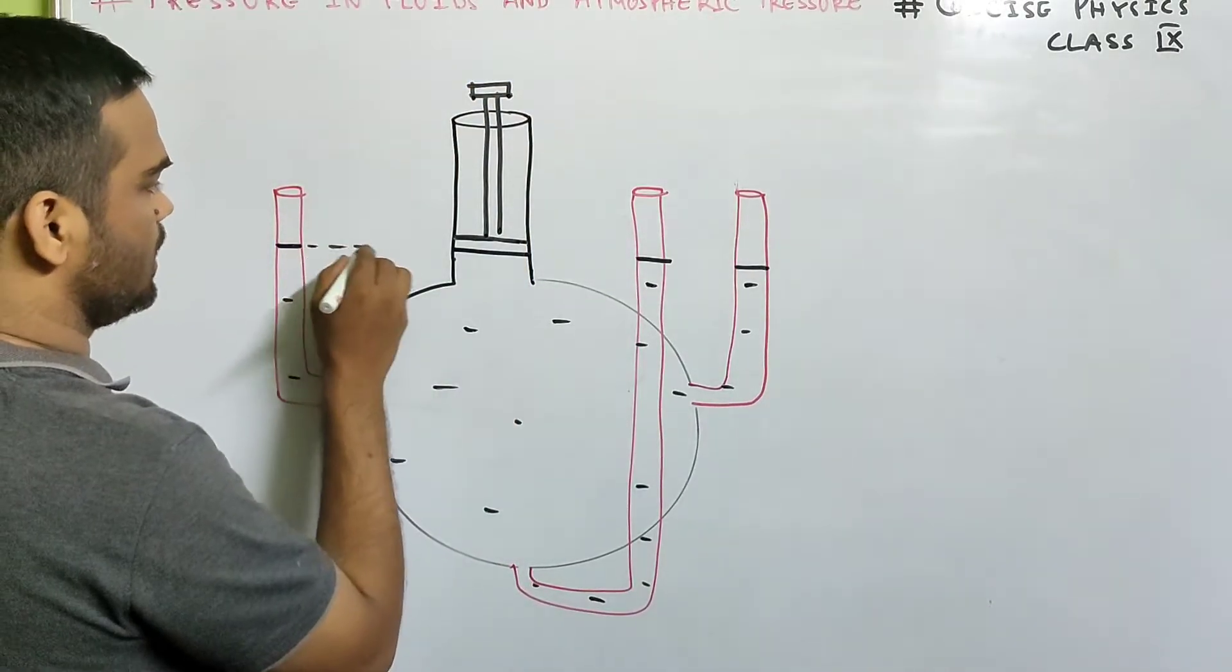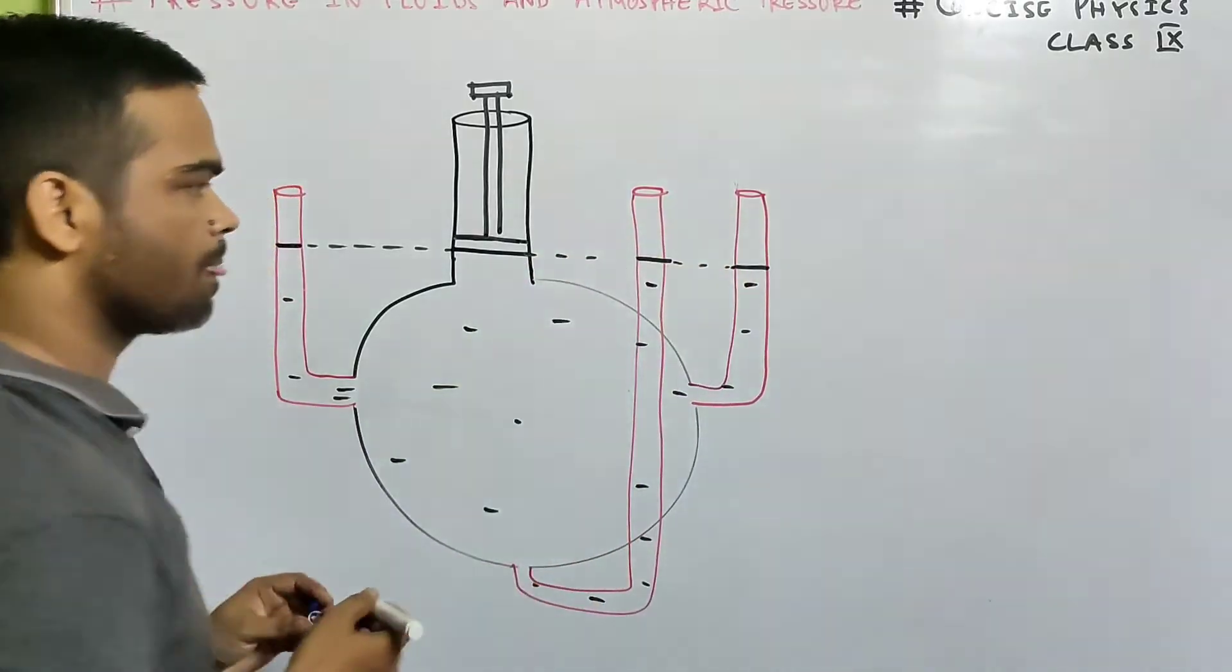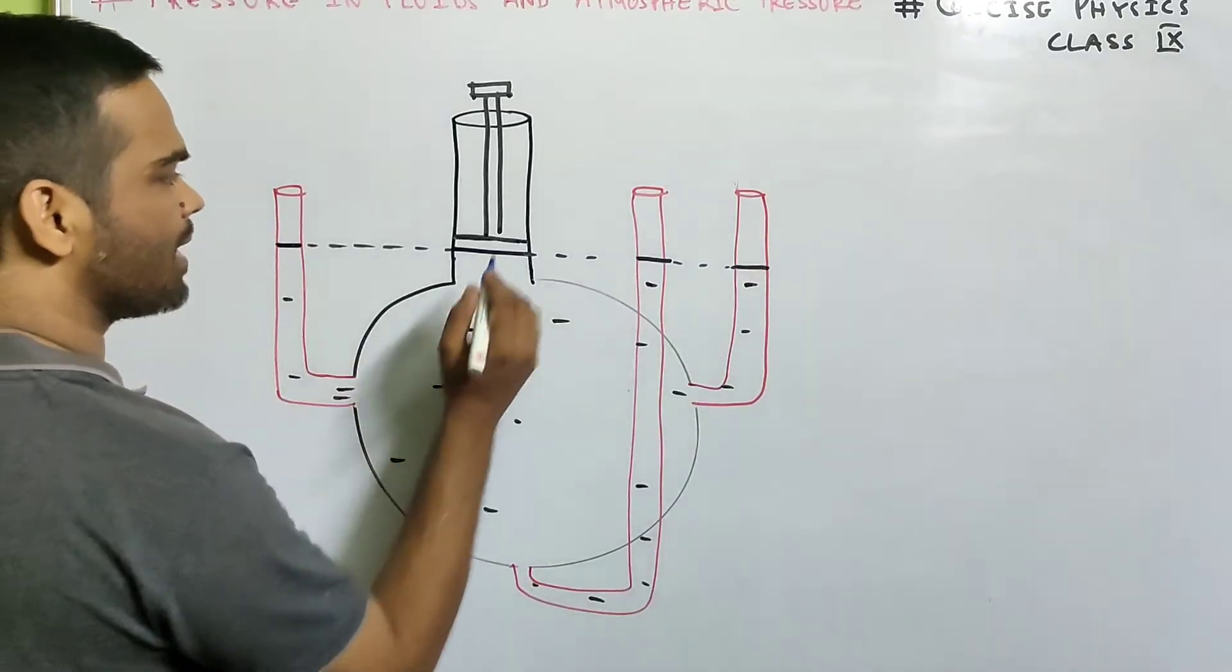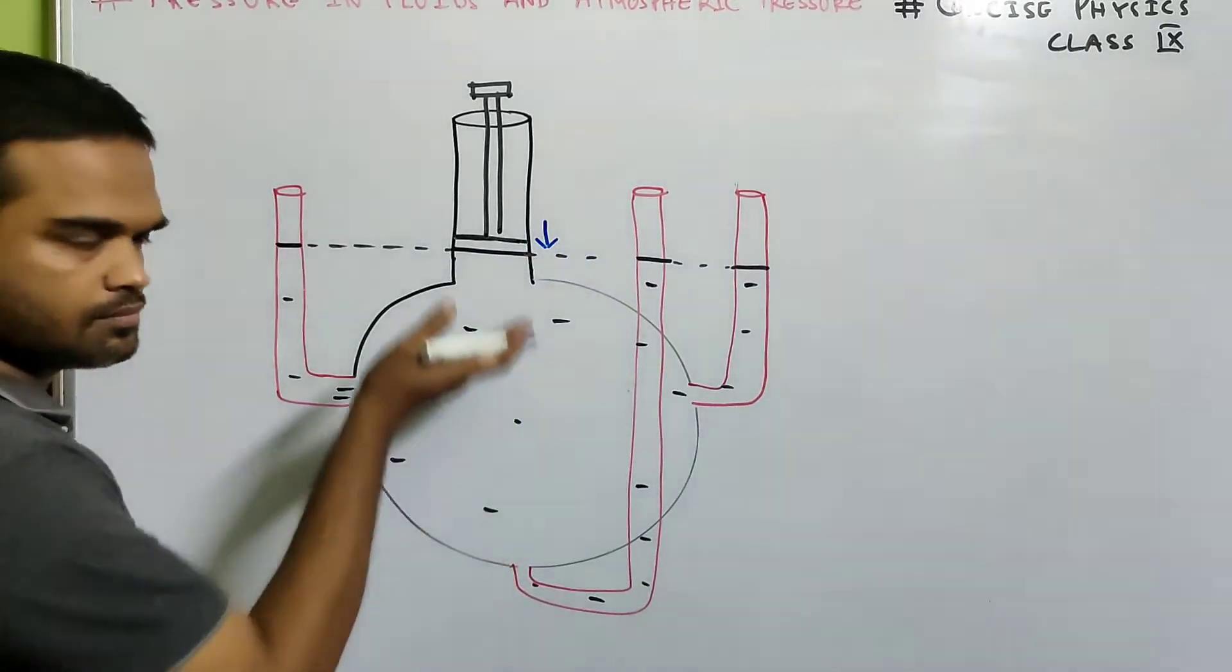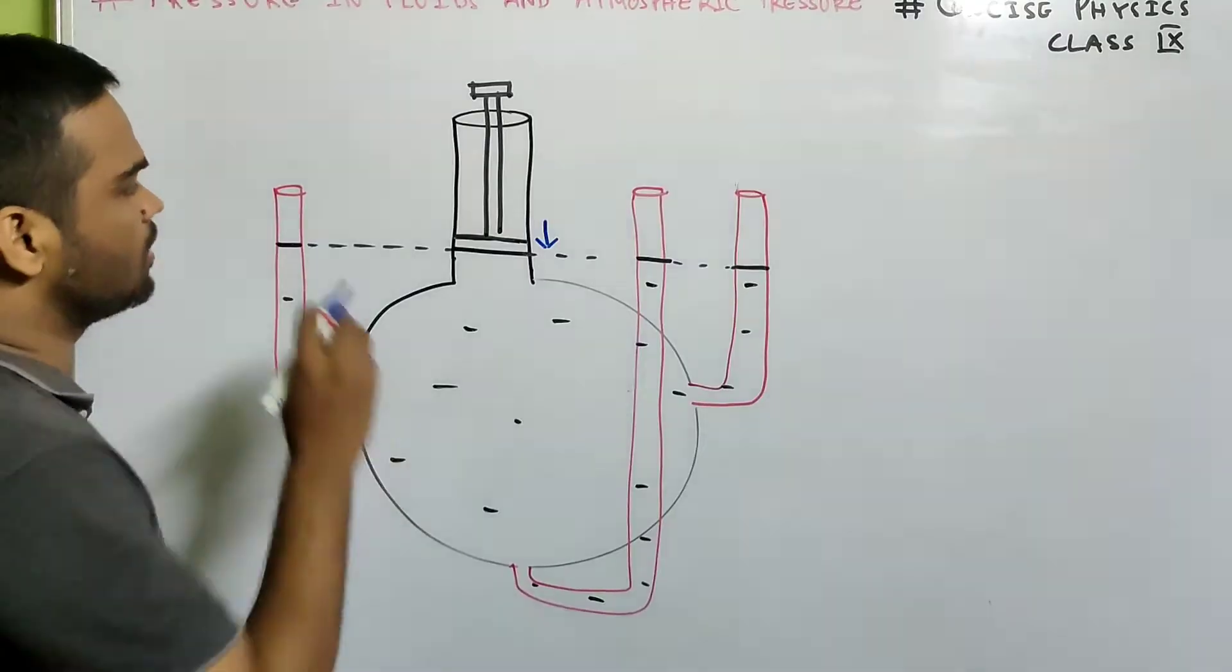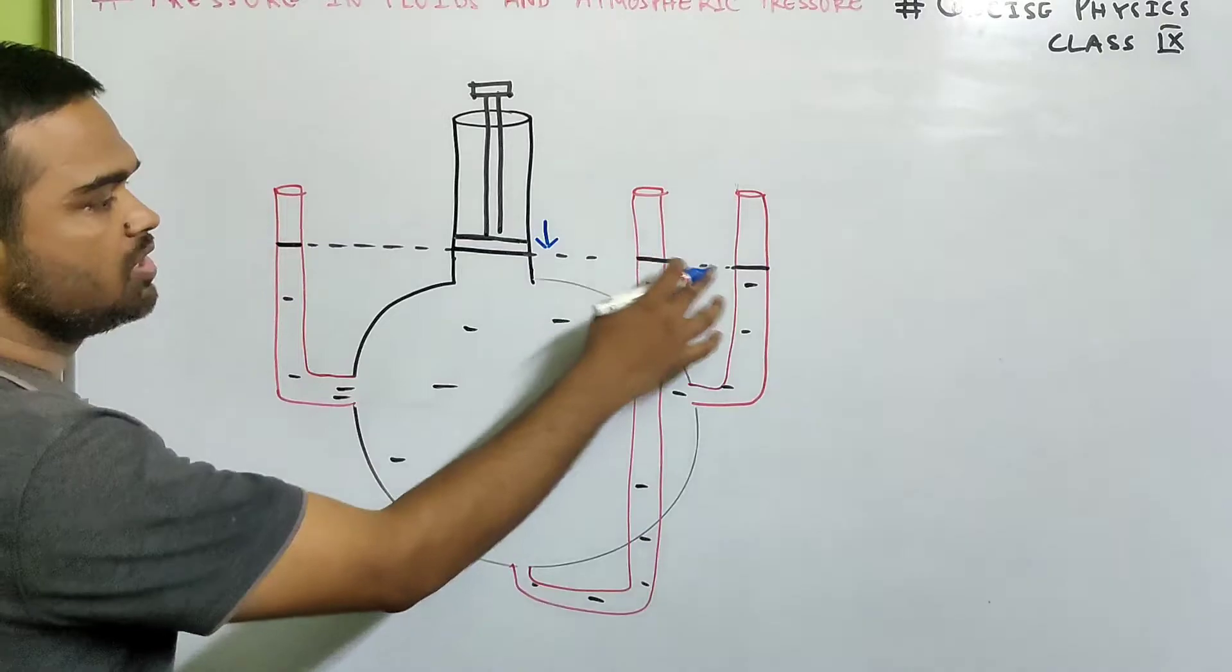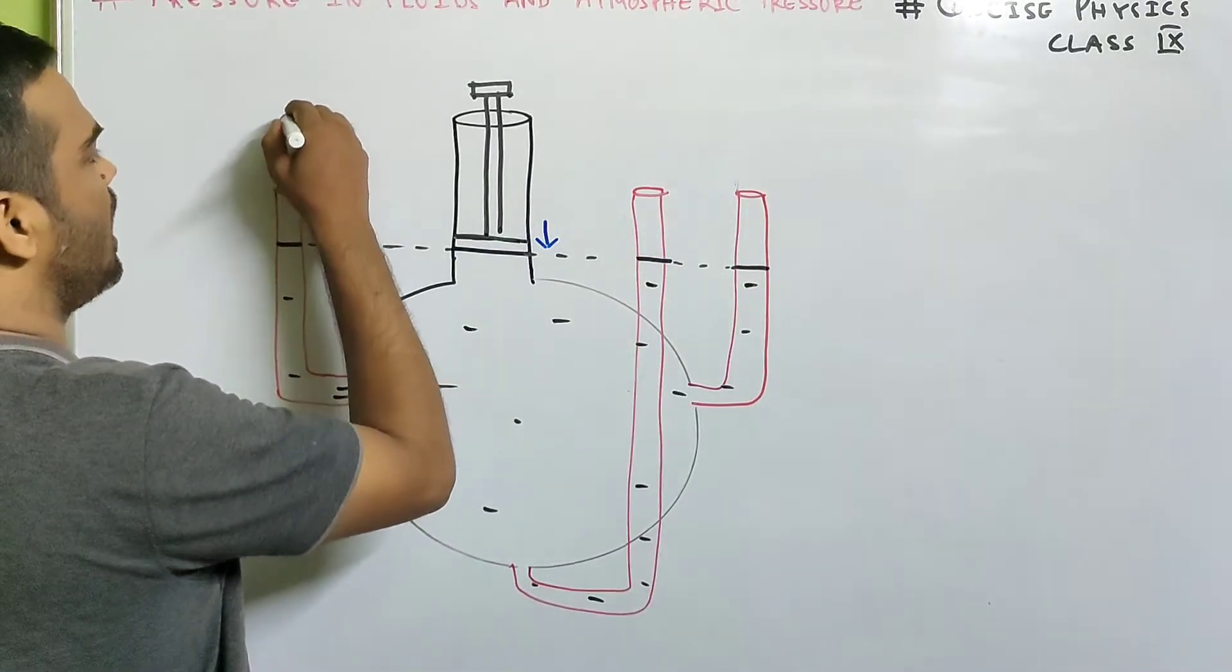Now the height of the water level was this. Now what do you do? You press this piston down. You're applying some pressure. You press this piston down. Then you see that the water comes out of these tubes, of these three tubes. Water comes out and when it comes out